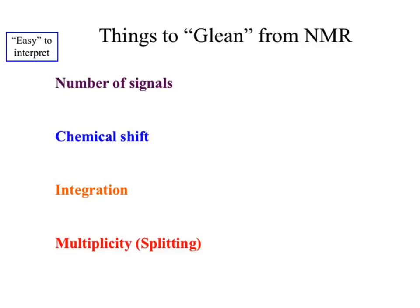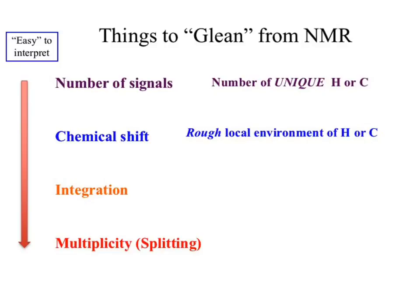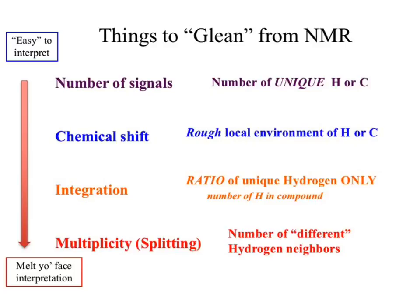Four things to get from NMR: number of signals, chemical shift, integration, and multiplicity — listed in order of difficulty. Number of signals gives you unique hydrogens and carbons. Chemical shift gives the rough local environment. Integration gives a ratio of unique hydrogens — not the exact number. Splitting gives the number of different hydrogen neighbors. Start with the easiest; if you aren't confident in splitting, evaluate the other pieces and get what you can.